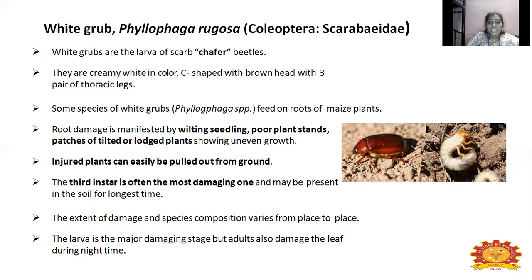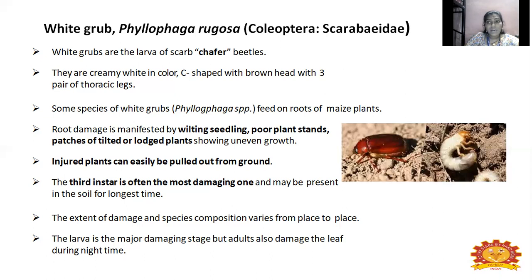These are the symptoms caused by white grub. In the early stage, you can see wilting seedlings — small maize seedlings dry up and show poor plant stands. Even when irrigating normally, the plants cannot stand. You can also see patches of tilted or lodged plants showing uneven growth. The injured plant can be easily pulled out from the ground. When it comes to the third instar of the pest, it is often the most damaging stage and may be present in the soil for the longest time. Species composition varies from place to place.